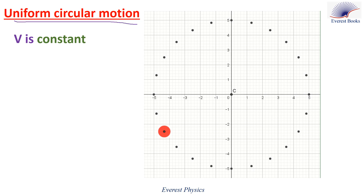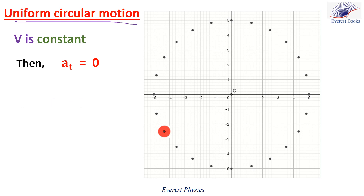We know that the tangential acceleration is the time derivative of the speed, so in uniform circular motion, the tangential acceleration equals zero. And the angular acceleration is given by AT over R. Since AT equals zero, the angular acceleration of a uniform circular motion equals zero. Now let's study the normal acceleration.